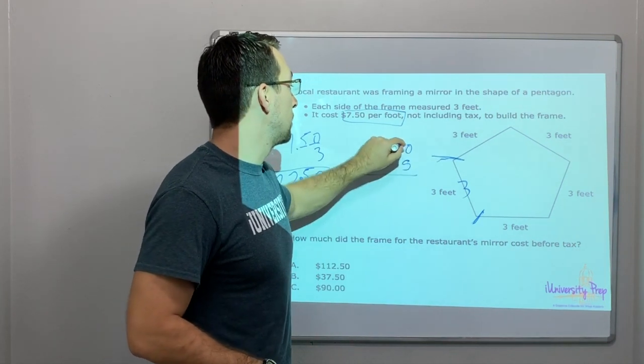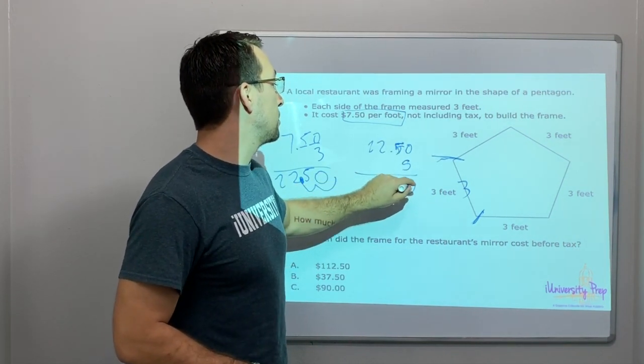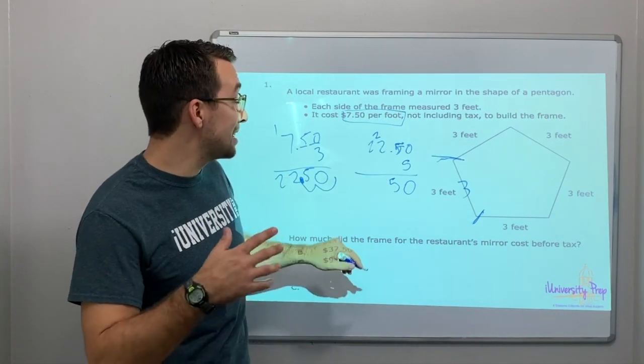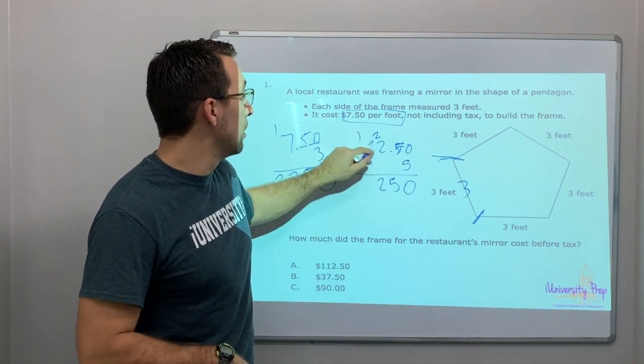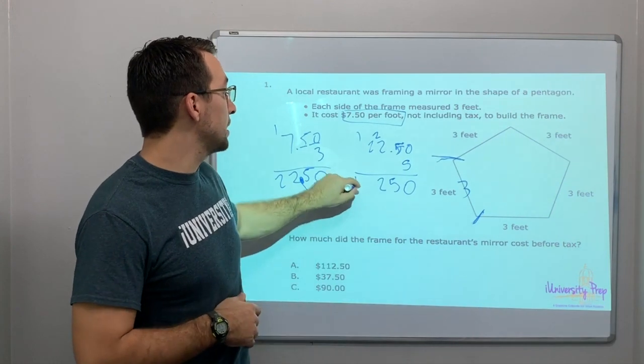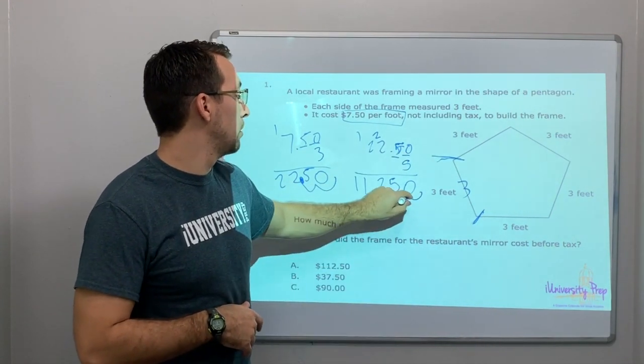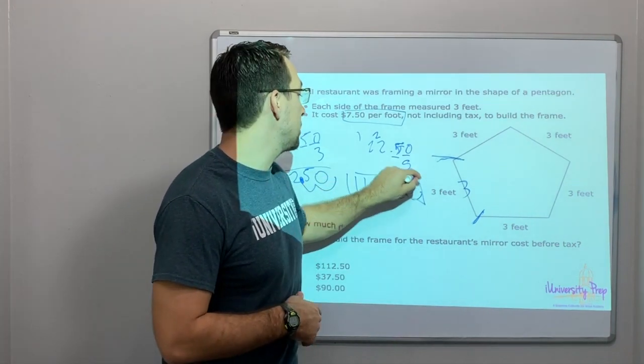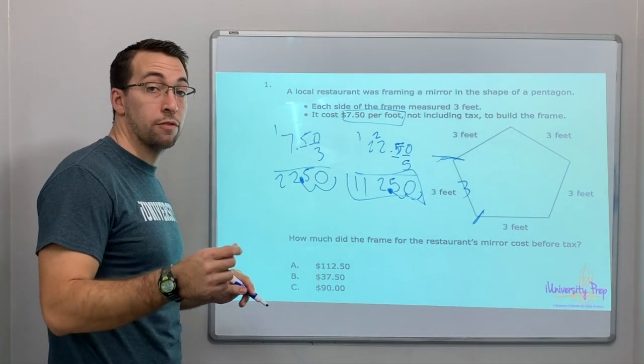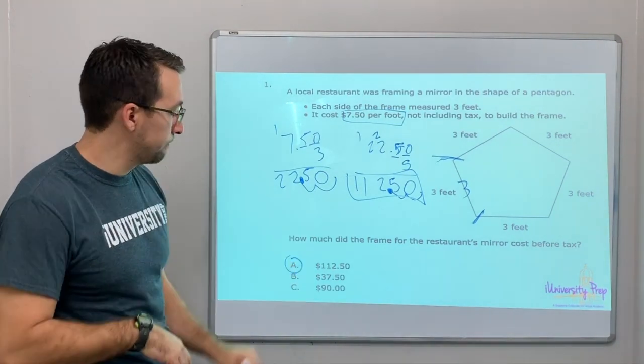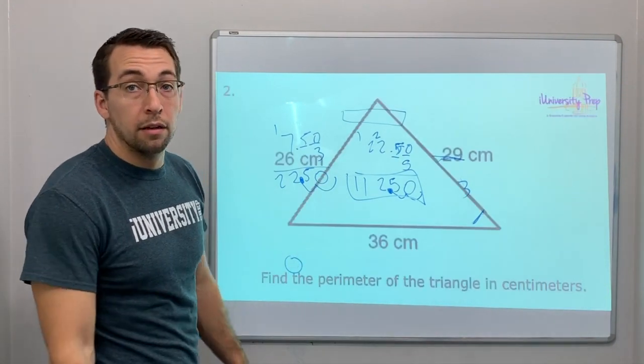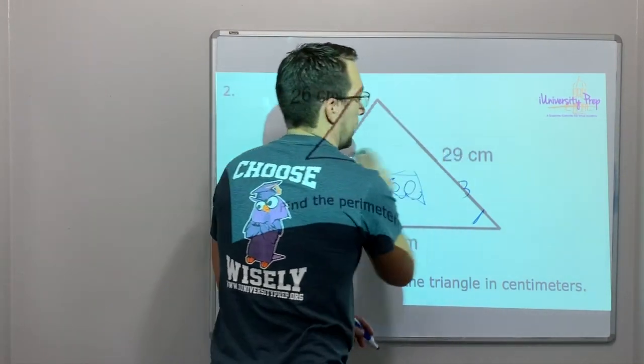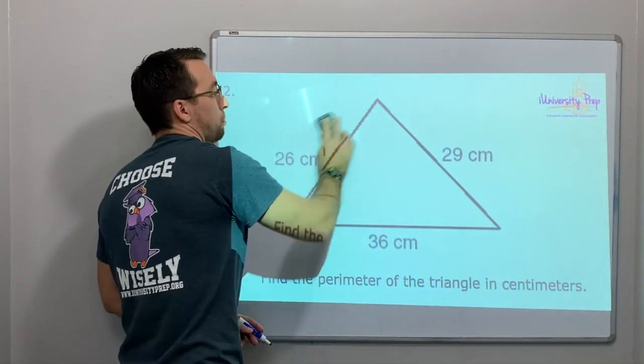5 times 0 is 0, 5 times 5 is 25, 5 times 2 is 10 plus 2 is 12, 5 times 2 is 10 plus 1 is 11. Our answer is $112.50. Remember it's a video - push pause, solve the problem, and then check your answer later.